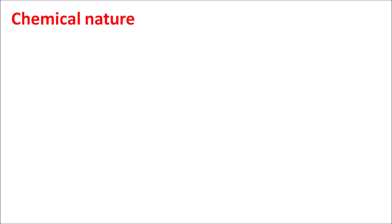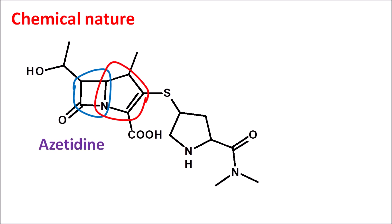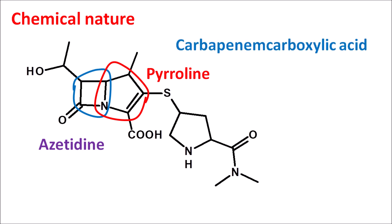Regarding the chemical nature of meropenem, its structure contains a heterocyclic ring system made up of two rings: an azetidine ring and a pyroline ring system. Meropenem is a combination of azetidine and pyroline, and the entire ring system is called carbapenem with a carboxylic acid group, making meropenem a carbapenem carboxylic acid derivative.